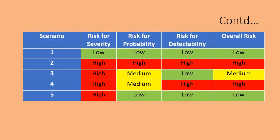Let us see how risk classification is done for FMEA. In scenario 1, risk for severity is low, risk for probability is low, and risk for detectability is also low — that means the overall risk is low. In scenario 2, risk for severity is very high, risk for probability is also high, and risk for detectability is also high — everything is high, so the overall risk is high.